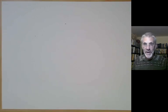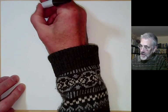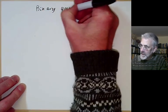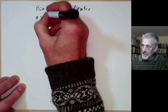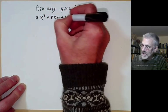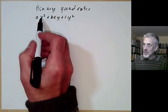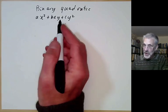This lecture is part of Berkeley Math 115, an introductory undergraduate course on number theory, and will be more about binary quadratic forms. A binary quadratic form is something of the form ax squared plus bxy plus cy squared. Binary means there are two variables x and y, and quadratic means it has degree 2.